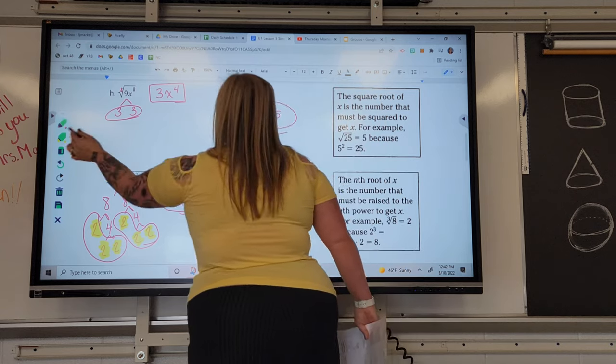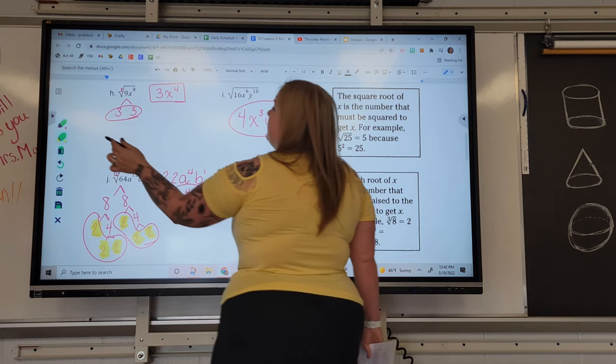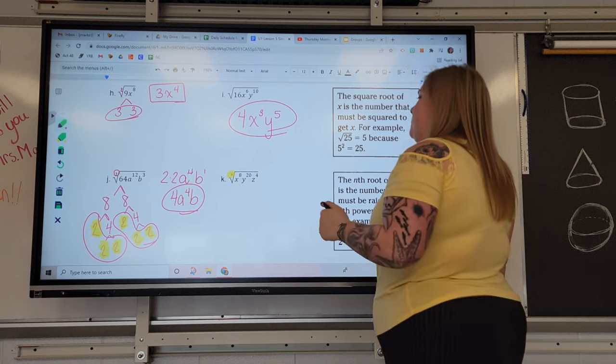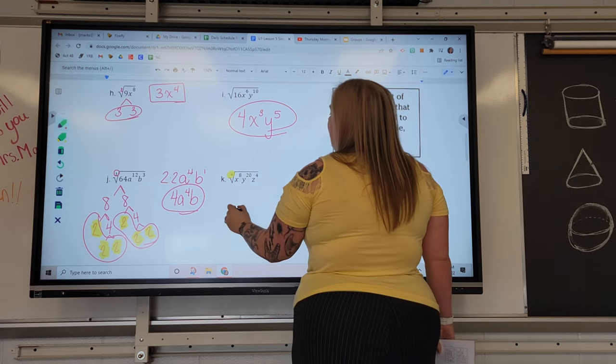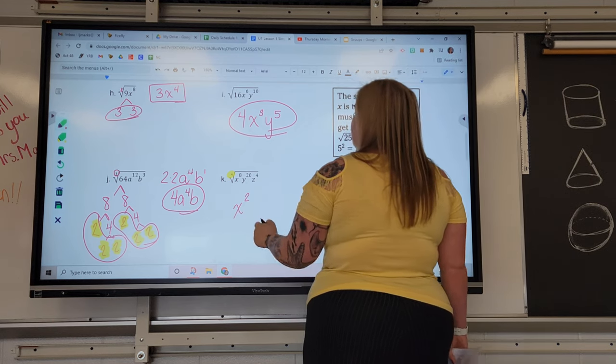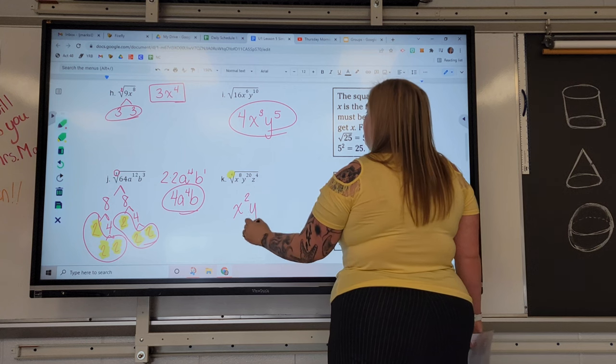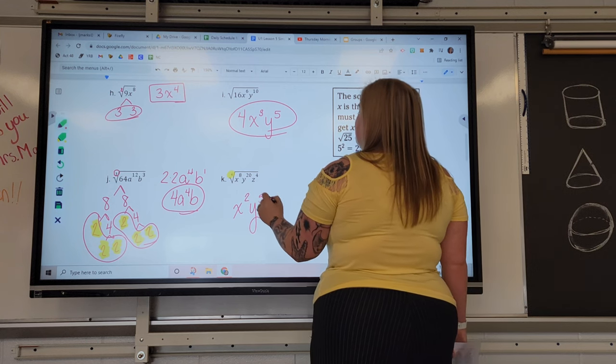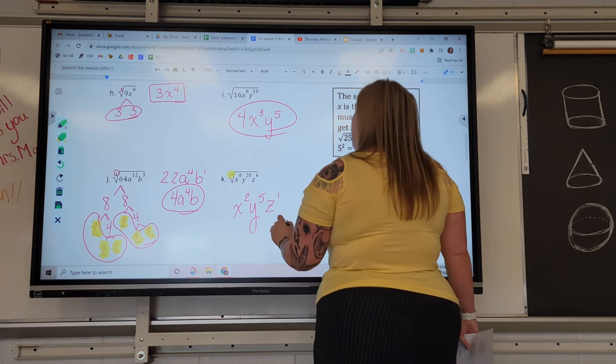The last one here. This is the 4th group. We're looking for groups of 4. How many groups of 4 can I make with 8 X's? 2. How many groups of 4 can I make with 20 Y's? 5. How many groups of 4 can I make with 4 Z's? 1.